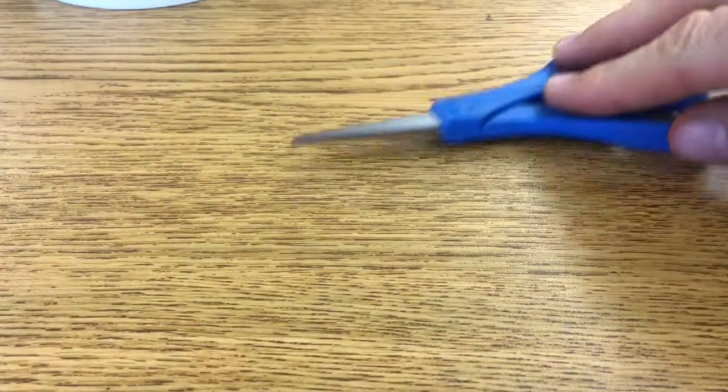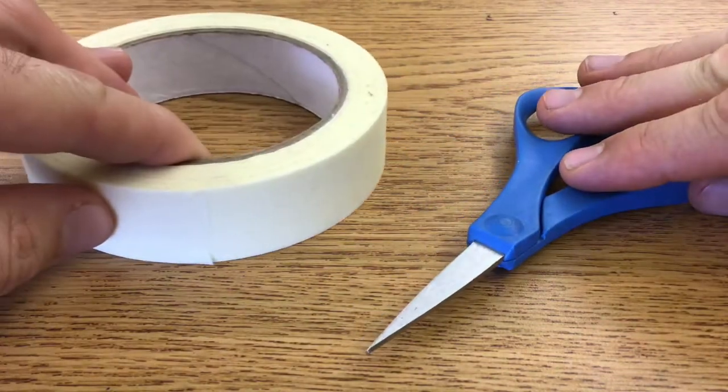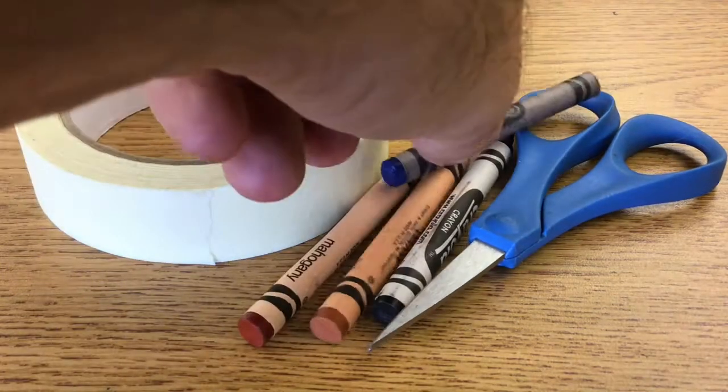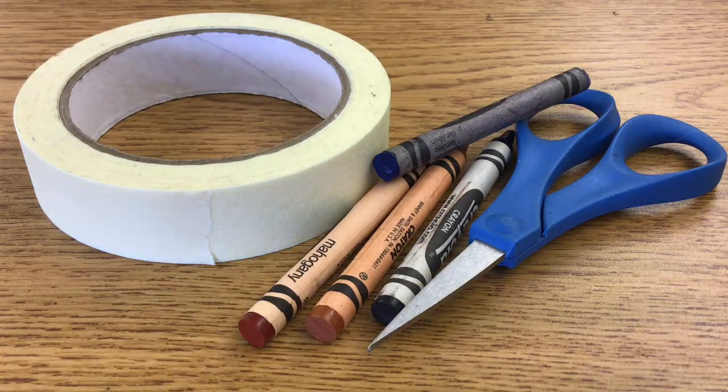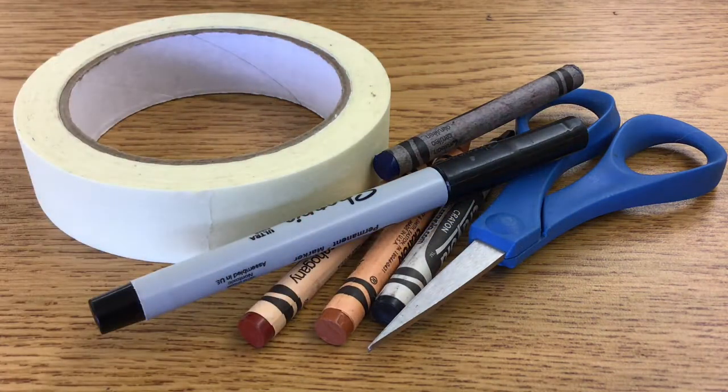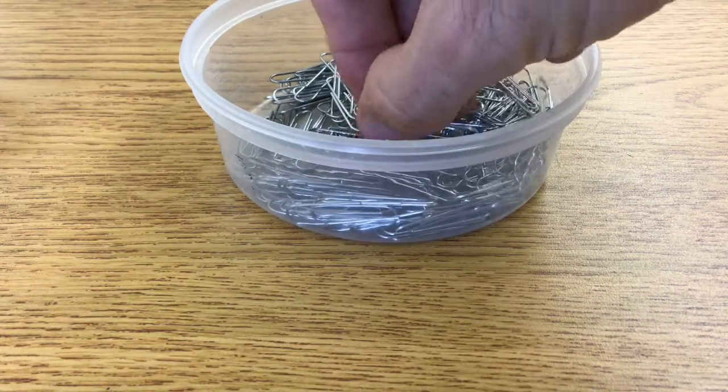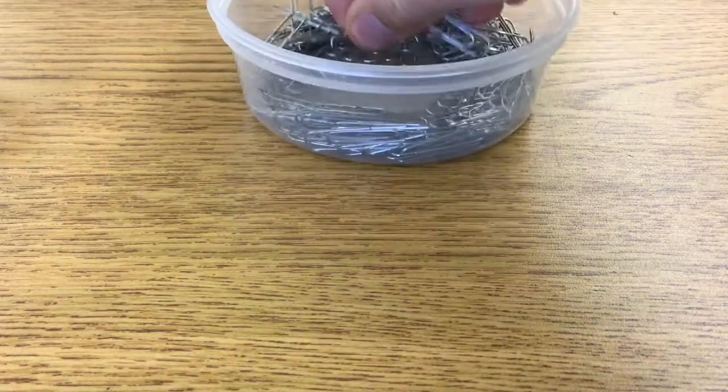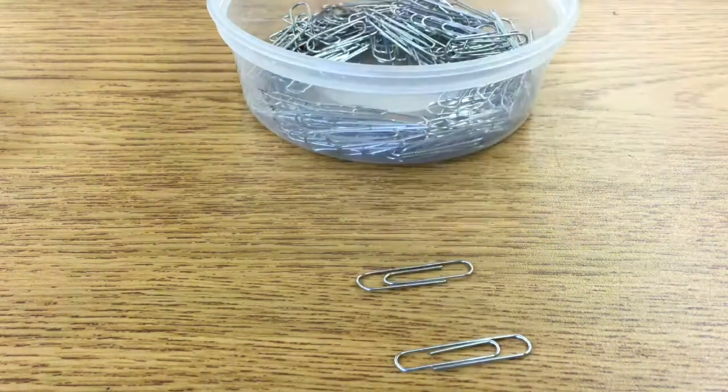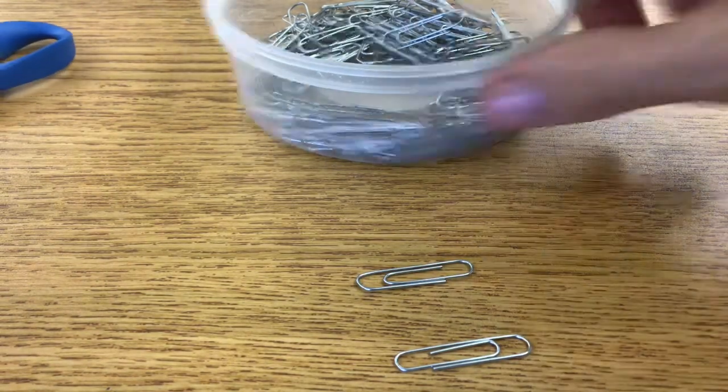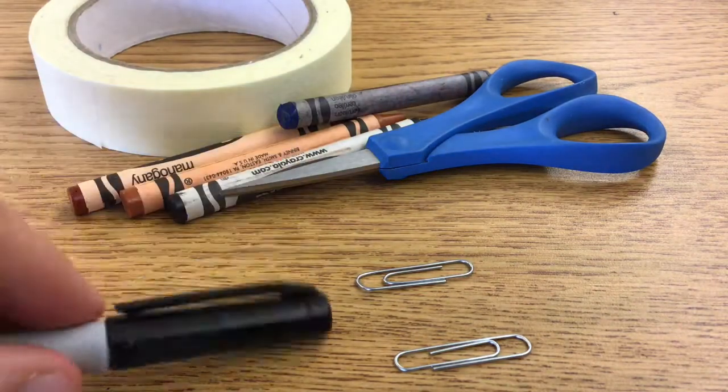To get started, you'll need scissors and tape, a handful of crayons in whatever colors you like, a pen or marker—a Sharpie is best—and some paper clips. Get a couple of small ones, not the really big ones. When you've got all that stuff, you'll be ready to begin.